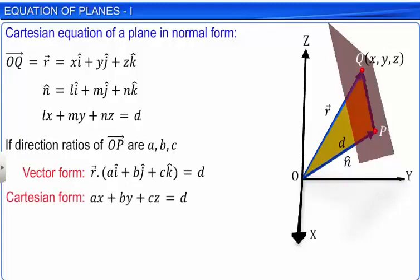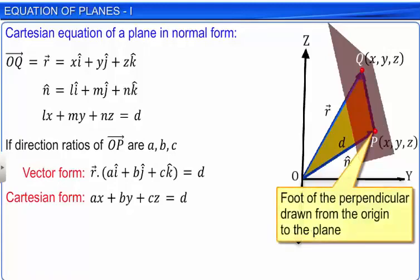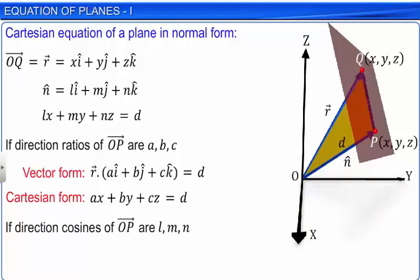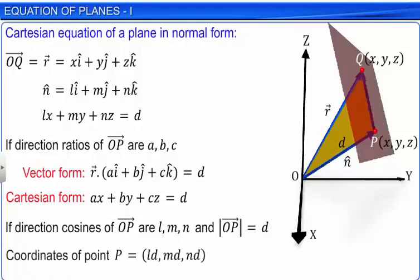Point P represents the foot of perpendicular OP drawn from the origin to the plane. Let us learn how to find the coordinates of point P. If the direction cosines of normal OP to the plane from the origin are l, m, n and the distance of the plane from the origin is d, then the coordinates of the foot of the perpendicular, that is point P, are given by ld, md and nd, as shown.